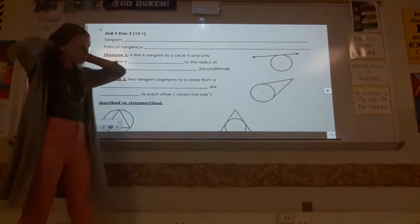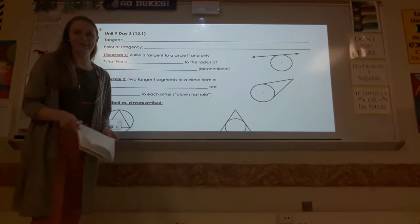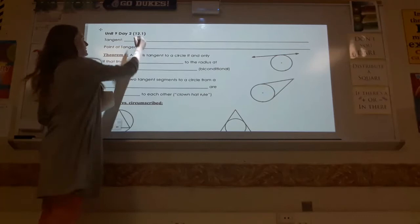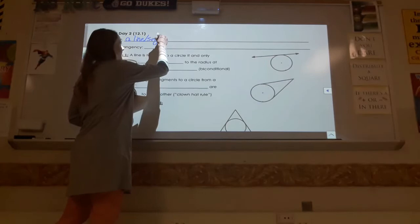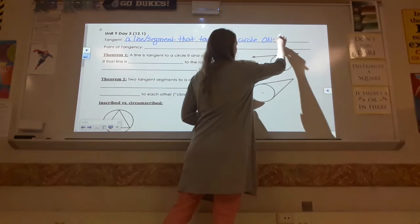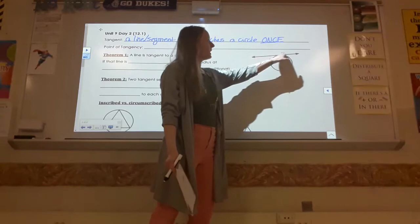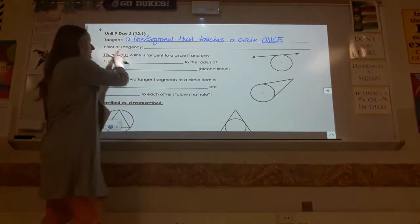For today's lesson we're going to be talking about tangents with circles. We've heard the word tangent before in Unit 7 when we were talking about trigonometry. This tangent is different. For a circle, the definition of a tangent is a line or segment that touches a circle once. Emphasis on that word once. So if you envision a tangent, it's a line or a segment that just skims right over the top of a circle, only going to hit the circle in one point, and that point is called the point of tangency.